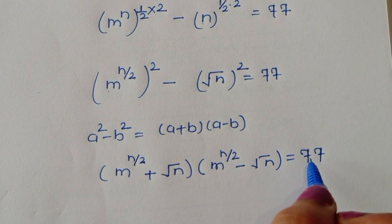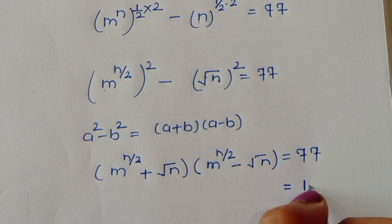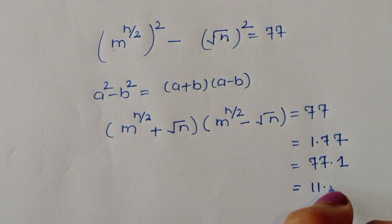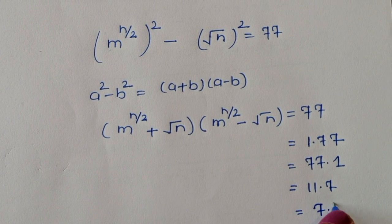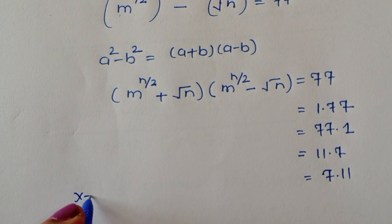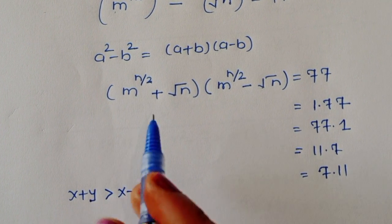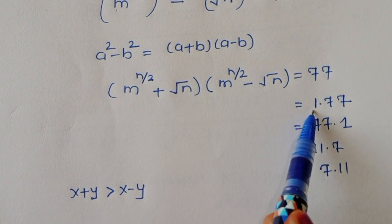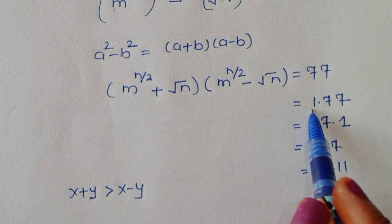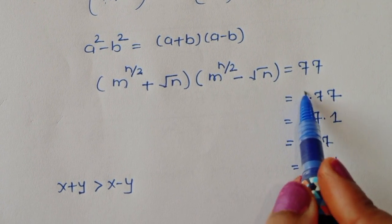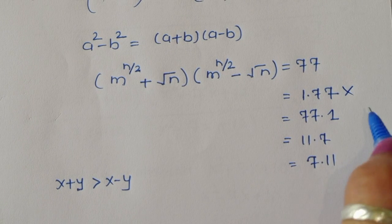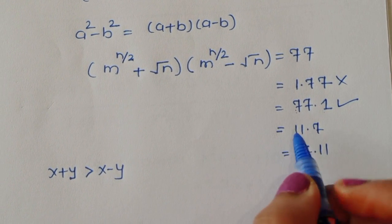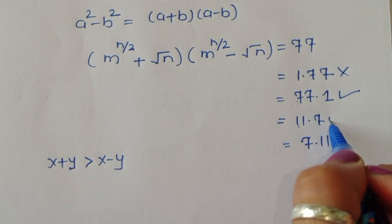Now we need to find the factors of 77. The factor pairs are: 1 times 77, 77 times 1, 11 times 7, and 7 times 11. We know that (x plus y) is always greater than (x minus y). So the first factor in each pair must be greater than the second. The pair 1 times 77 is rejected since 1 is not greater than 77. The pair 77 times 1 is valid. The pair 11 times 7 is valid since 11 is greater than 7. The pair 7 times 11 is rejected.